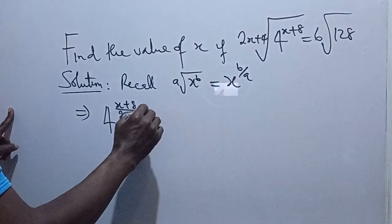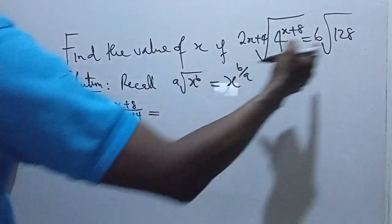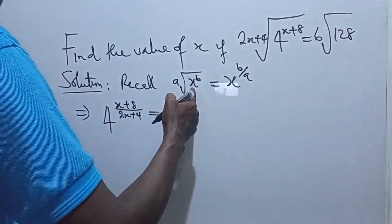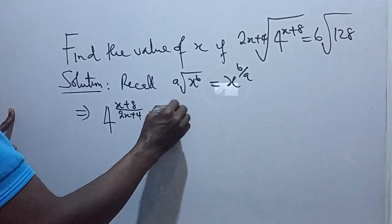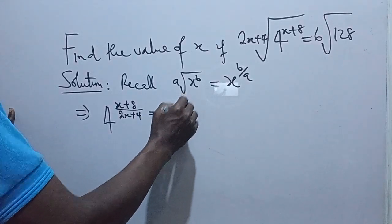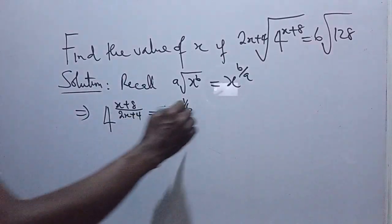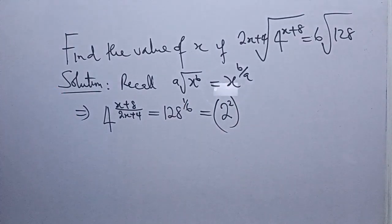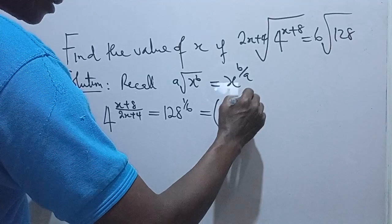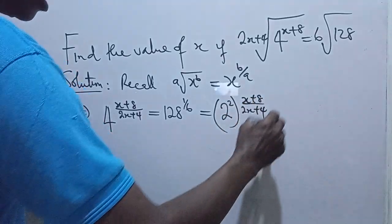So yes, is equal to, we can also say that 6 here is a, 128 is x, then the b is 1. So that means we can write it as 128, 1 over 6. That is 1 sixth root of 128. So now, if you look at this closely, you can split this 4 into its index form. So 2 raised power 2, that is 4. Beautiful. Then x plus 8 all over 2x plus 4 is equal to...